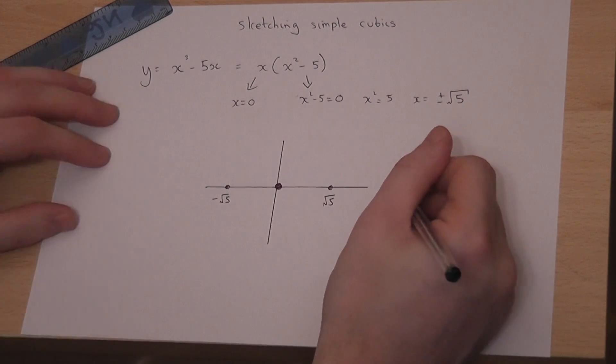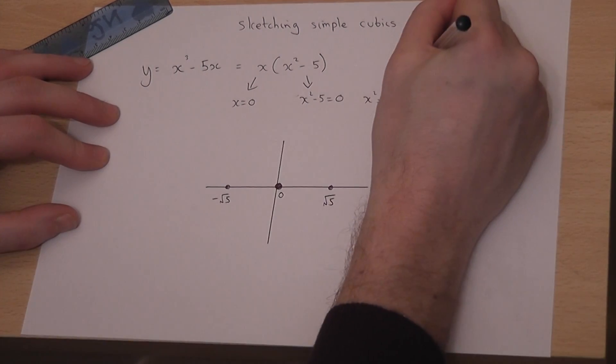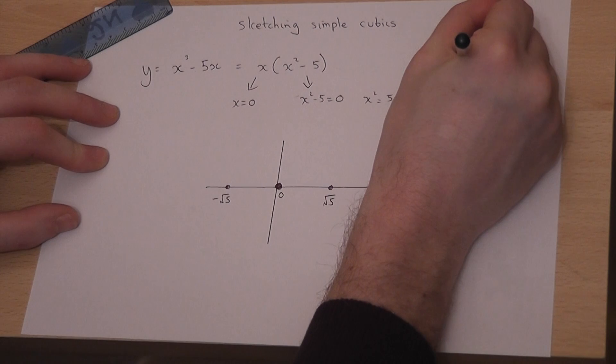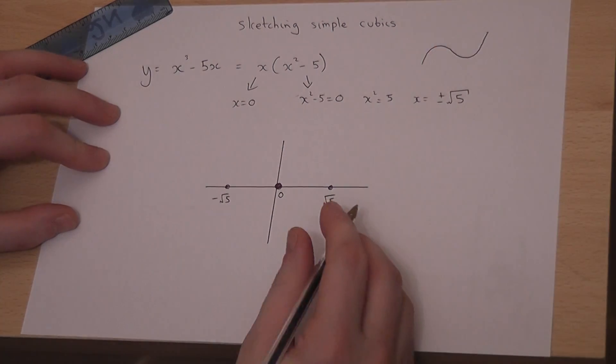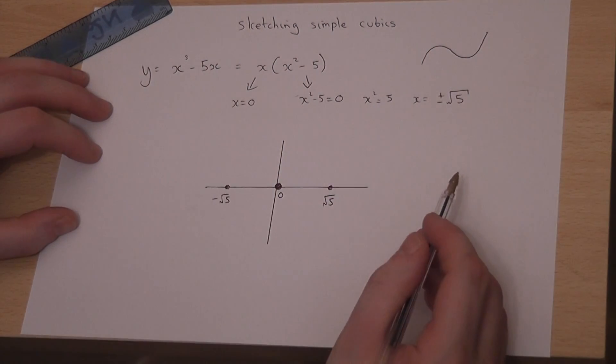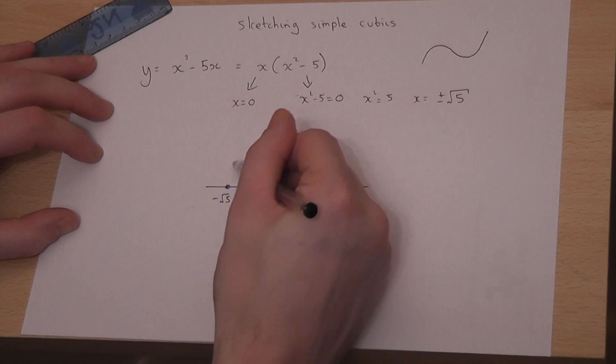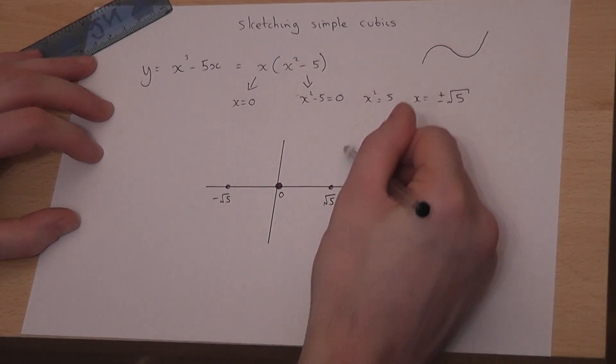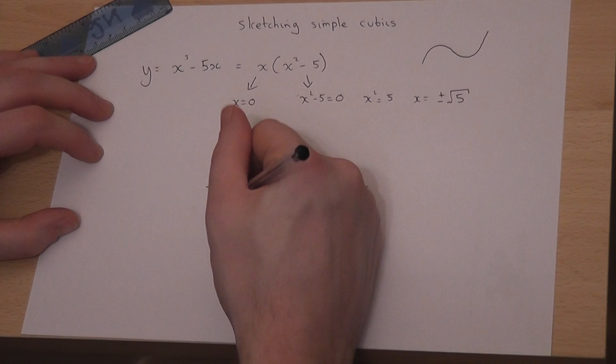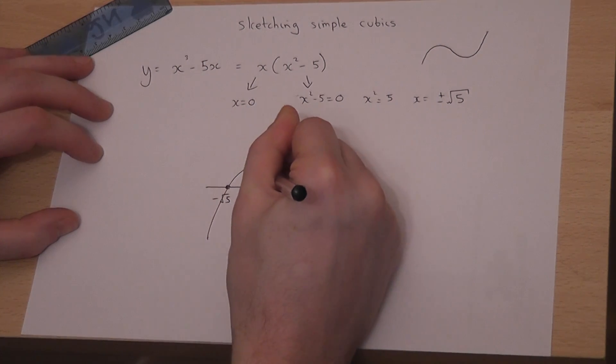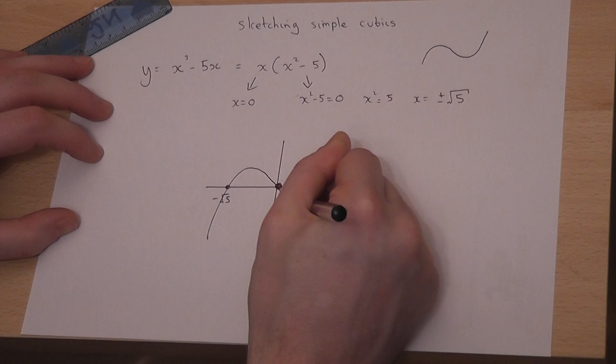Now a cubic graph is generally that sort of S shape. It's a positive cubic graph. So therefore this graph is an S passing through those three coordinates. So the sketch will look something like this.